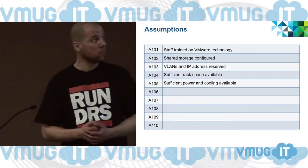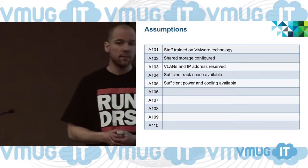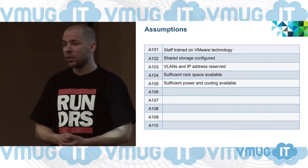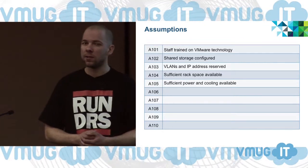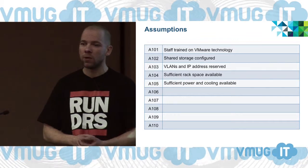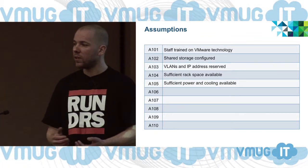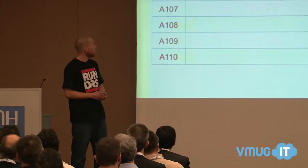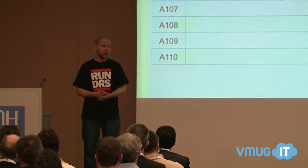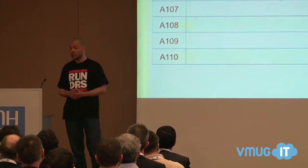Assumptions are things you haven't validated with your customer. A typical one is assuming sufficient power and cooling is available. I've seen people power on a VMAX only to find it's consuming a lot more power than expected and the whole environment goes down — or there's only one power line coming into the building, and if there's a power cut the whole data center freezes. I've seen that happen at hospitals, which is not pretty. Sufficient rack space available is another assumption that should actually be validated.